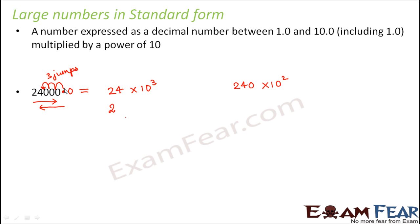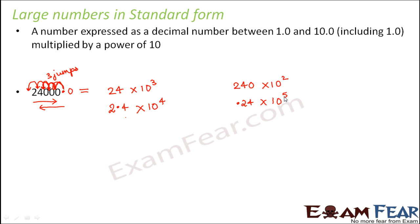Similarly, writing 240 means taking 2 jumps, so 240 into 10 to the power 2. Now if we want to shift the decimal point further to place it between 2 and 4, we write it as 2.4, and the power increases further to 10 to the power 4. If we shift the decimal point even further to get 0.24, the power increases to 10 to the power 5. So all of these are representations of the same number 24,000 in exponential format.